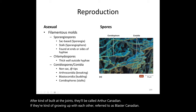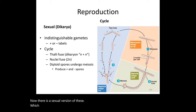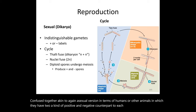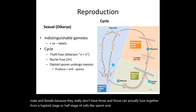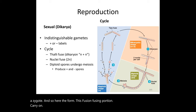The carrier stalk is always called the '-phore.' There is also a sexual reproduction mode: two hyphae can fuse together — analogous to sexual reproduction in animals — with a positive and negative counterpart rather than male and female. Two haploid hyphae fuse to form a structure called a dikaryon, similar to how sperm and egg form a zygote.